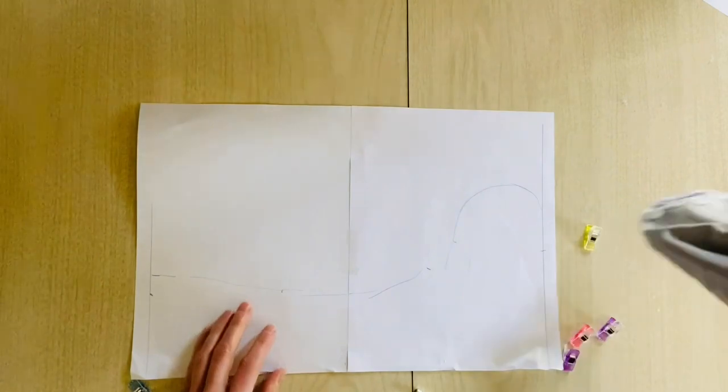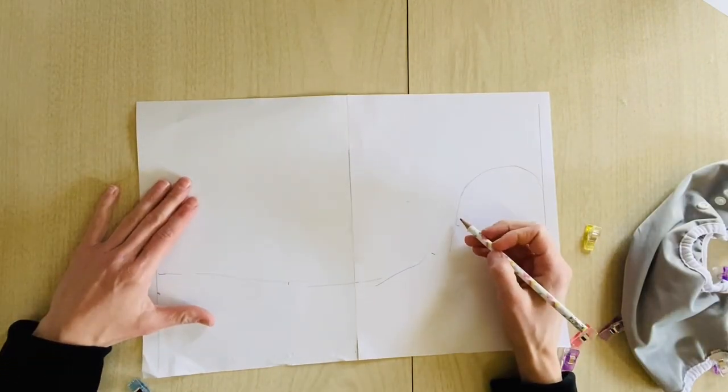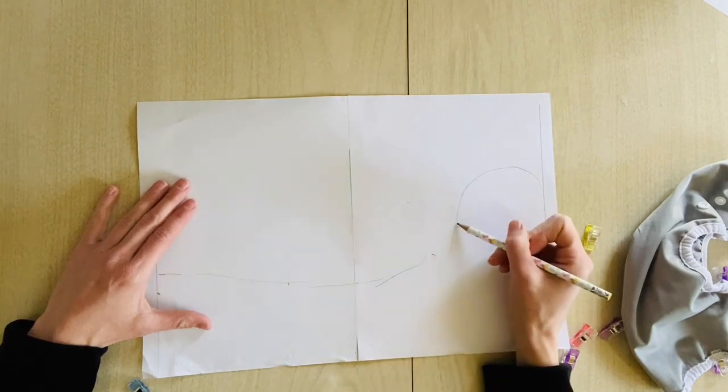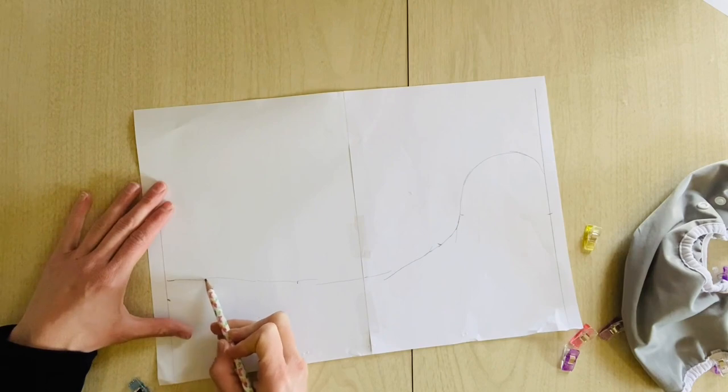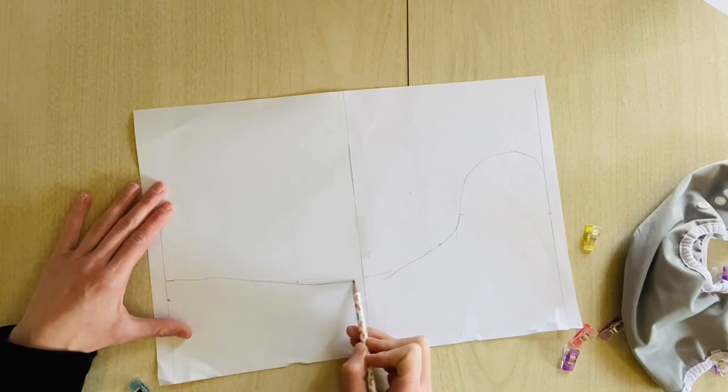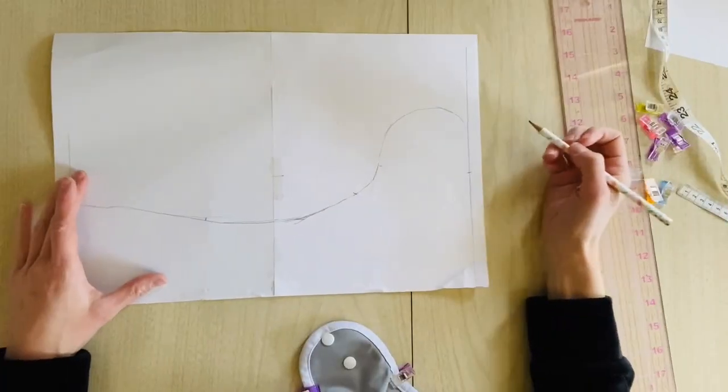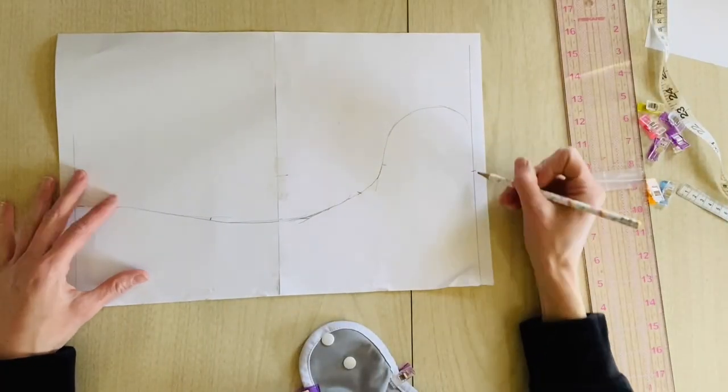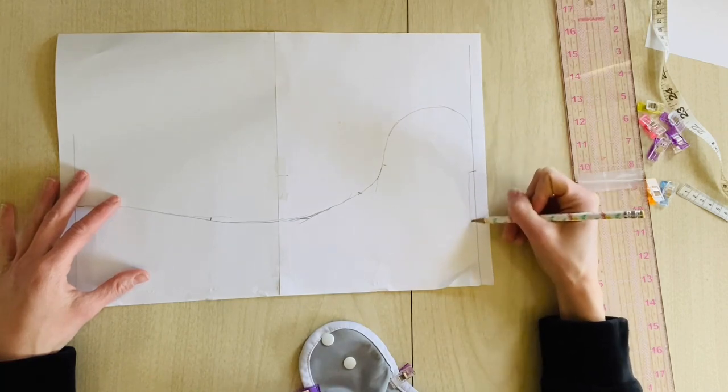All right, let's see the damage. So as you can see this is very messy and so we're just going to have to kind of come in and, you know, trace smooth over the lines. All right, and then just make your marks for where the elastic is.